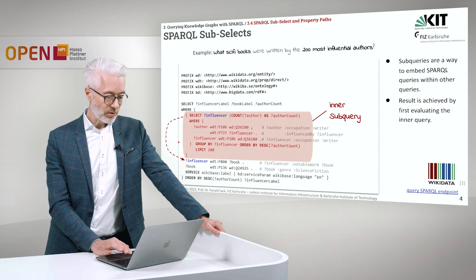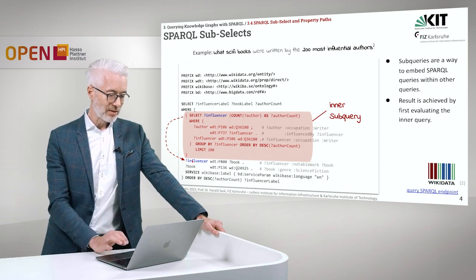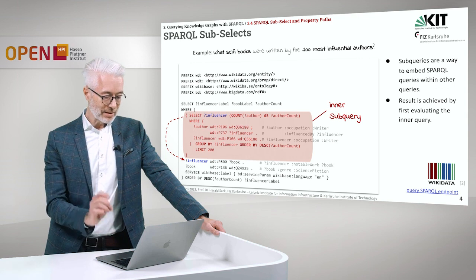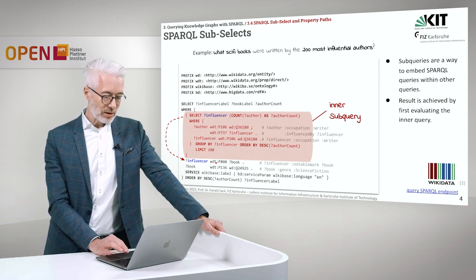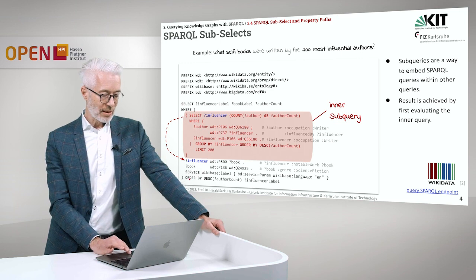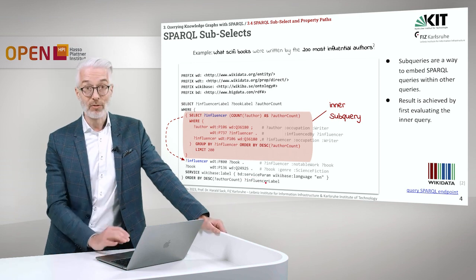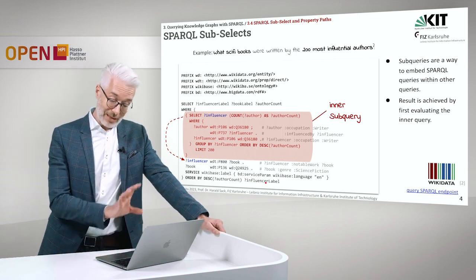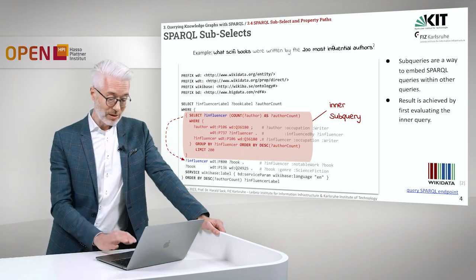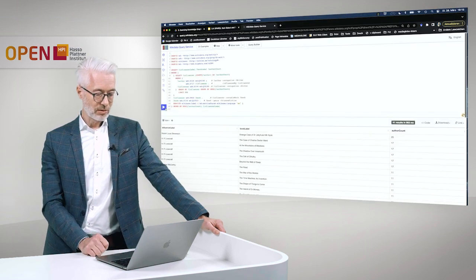We then deal with the inner subquery further in the outer query. There we take up the influencer variable created in the inner subselect, and ask what are the notable works — books — that belong to science fiction. This is what we want to know: what Sci-fi books were written by the 200 most influential authors. We output this in descending order by author count. Let's simply see what the result of this query might be.